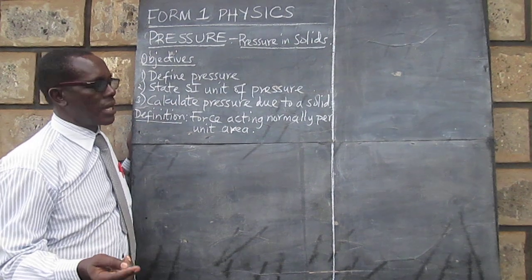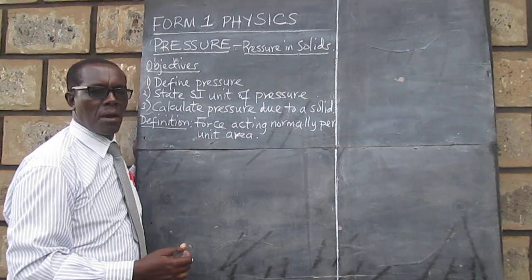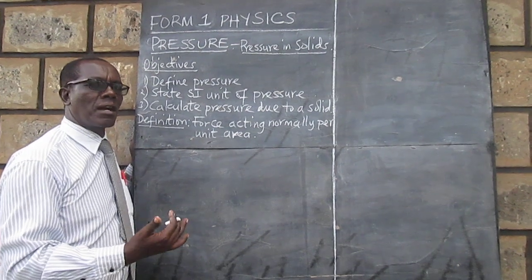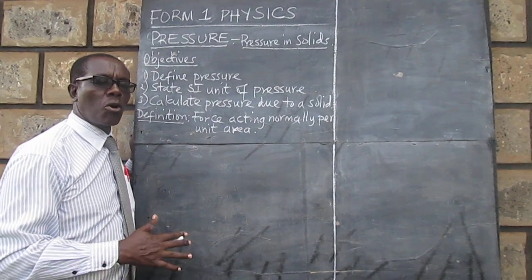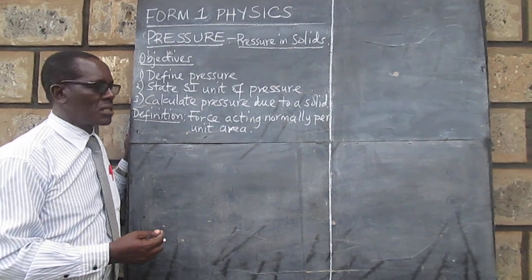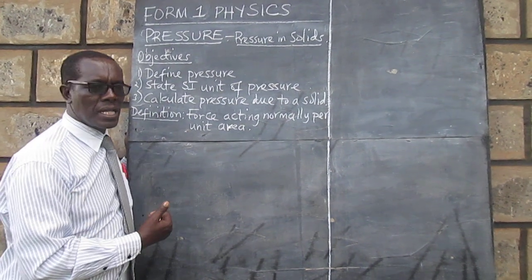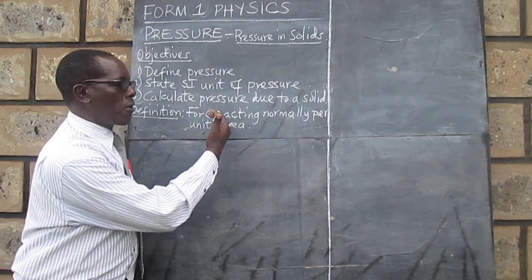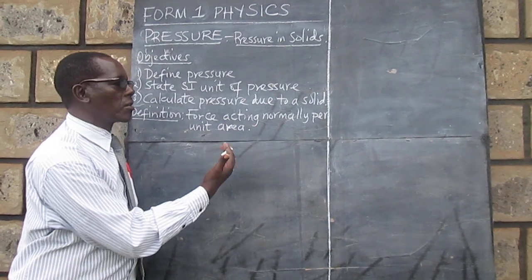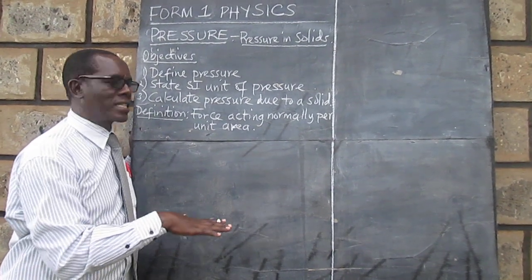In physics and mathematics, normal means at an angle of 90 degrees or perpendicular to a surface or to a line. So a normal to a surface is a perpendicular. In other words, we could say pressure is force acting or applied perpendicular to a particular surface.